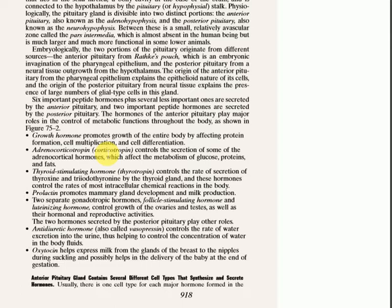The growth hormone promotes the growth of the entire body and affects each and every cell by multiplying cells, increasing mitosis, or increasing protein deposition. All other hormones affect their specific target cells. Adrenocorticotropin controls the secretion of some adrenocortical hormones, which affect the metabolism of glucose, proteins, and fats. Adrenocorticotropin hormone affects the adrenal gland, which is present just above the kidney, and the hormones of this gland are involved in glucose, protein, and fat regulation. Thyroid stimulating hormone affects T3 and T4, and these hormones almost control whole body functions.